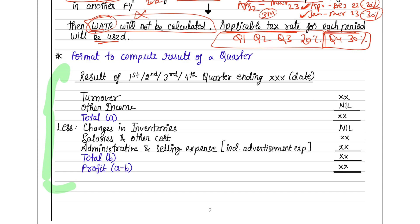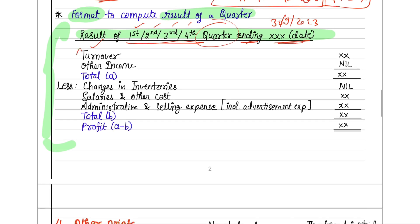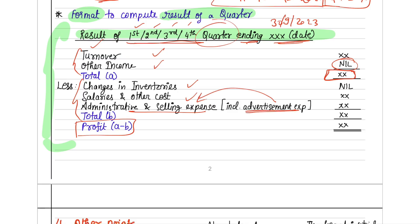When computing the result of a particular quarter, use the following format: write a heading such as 'Result of Q2 ending 30th September 2023.' Then list revenue (turnover and other income), followed by expenses (change in inventories, salaries and other costs, administrative and selling expenses — including advertisement expense if given). Revenue minus expenses gives your profit for that quarter.